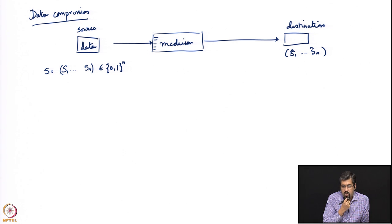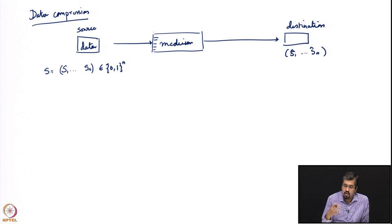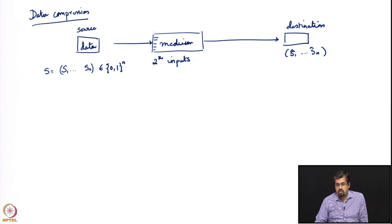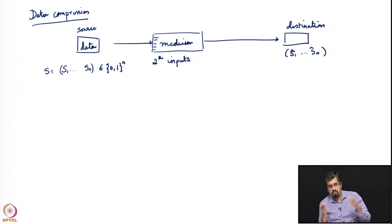When I talk of the limitations of the medium, I mean that the medium cannot accommodate all possible values of the source. Specifically, the medium can potentially take only 2^k possible inputs. Think of it this way: you have 2^n binary strings of length n.